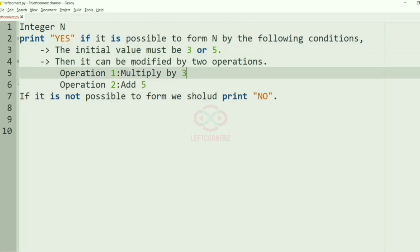Then it can be modified by two operations. Operation 1 is multiply by 3, and operation 2 is add 5. And if it is not possible to form, we should print NO.